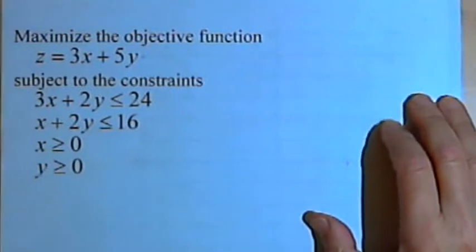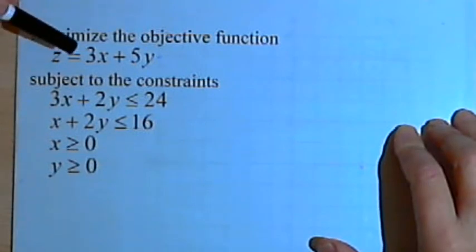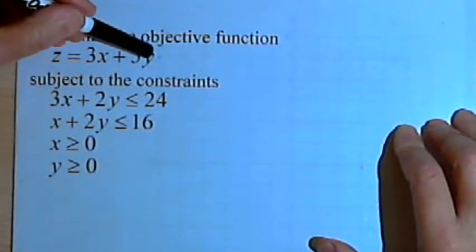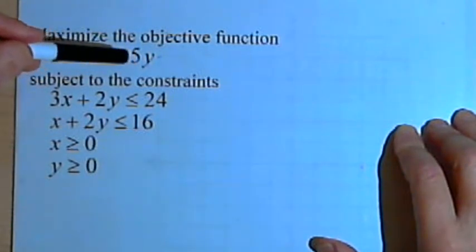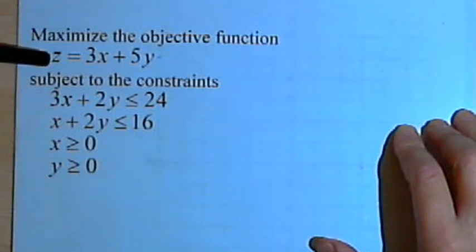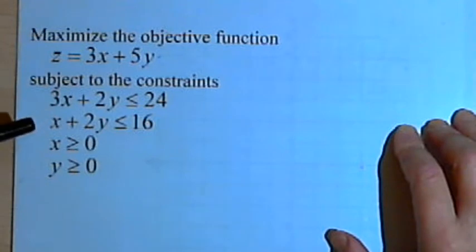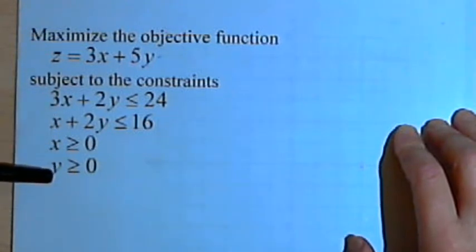Here's what this means. We've got to find values for x and y that we can put into this objective function z equals 3x plus 5y so that z will be as big as possible. But we can't just use any values. We've got to use values that will work with these inequalities. So first we'll deal with the inequalities.